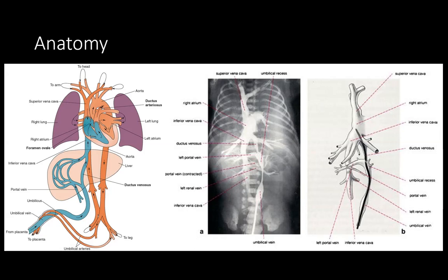From the umbilical recess, the vein goes posteriorly through the ductus venosus and joins the inferior vena cava — the site where most hepatic veins also join. From the inferior vena cava, it ascends superiorly towards the junction of the right atrium and inferior vena cava.